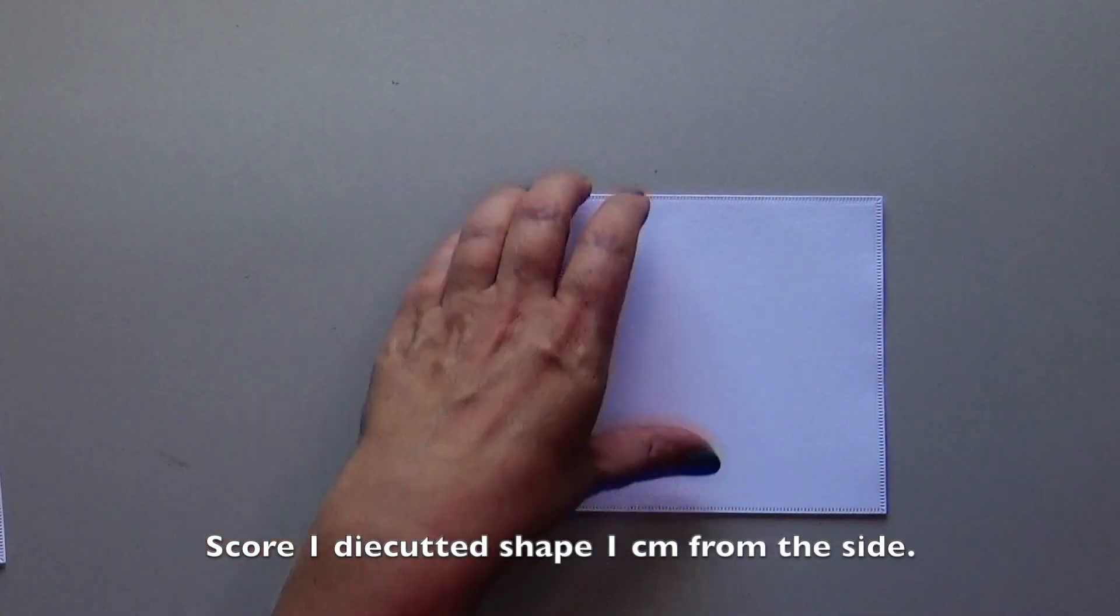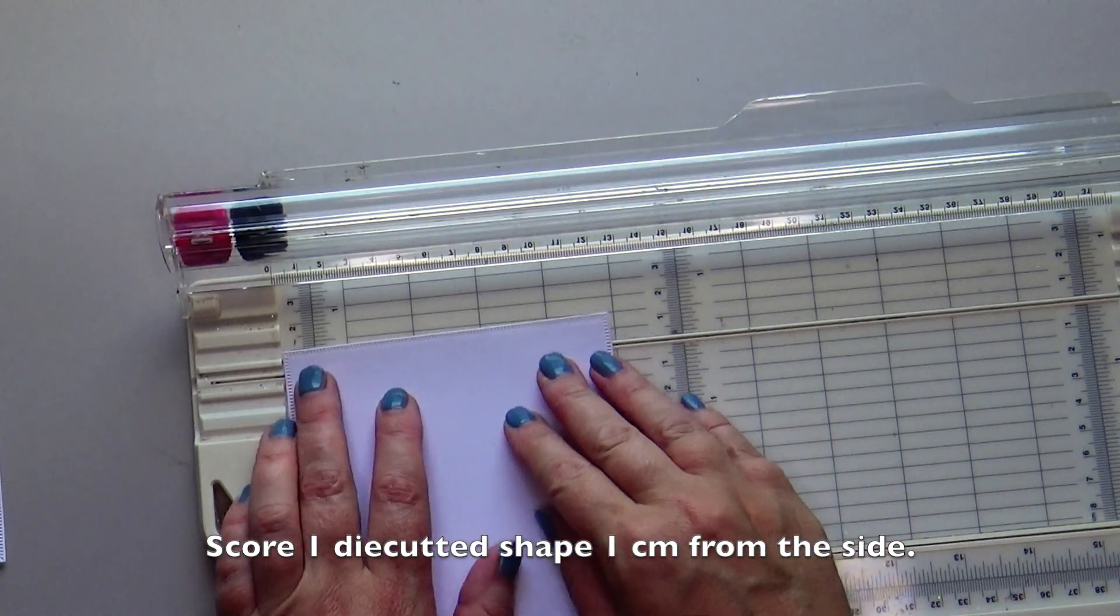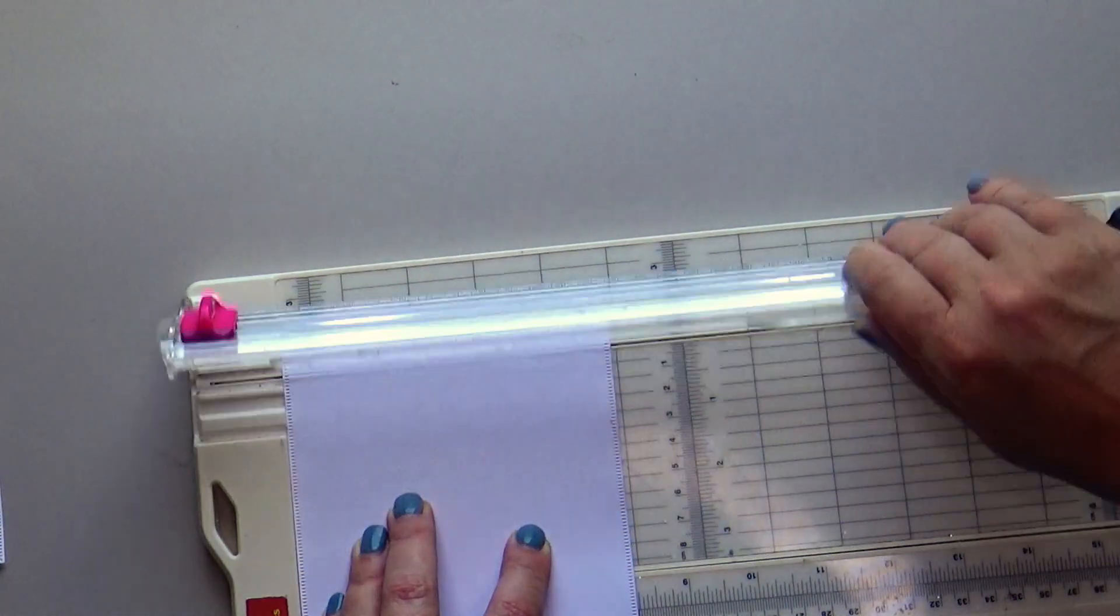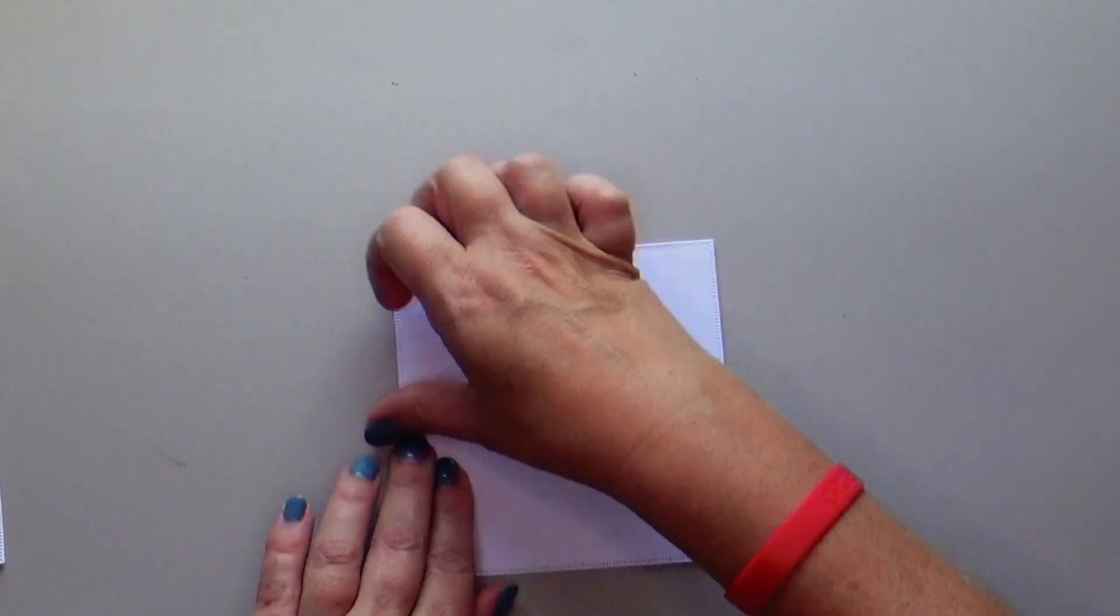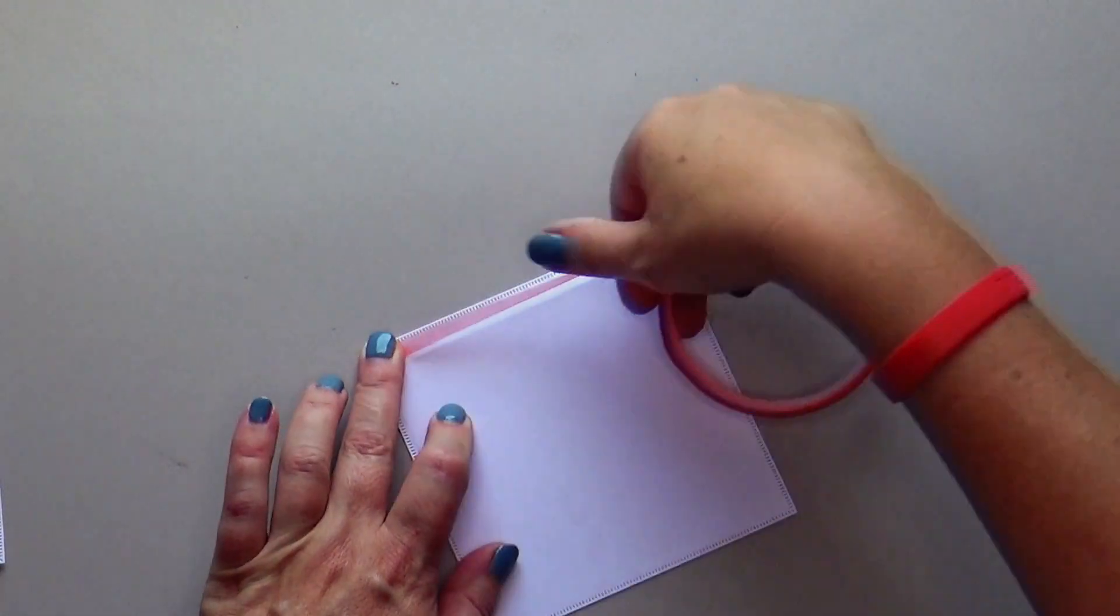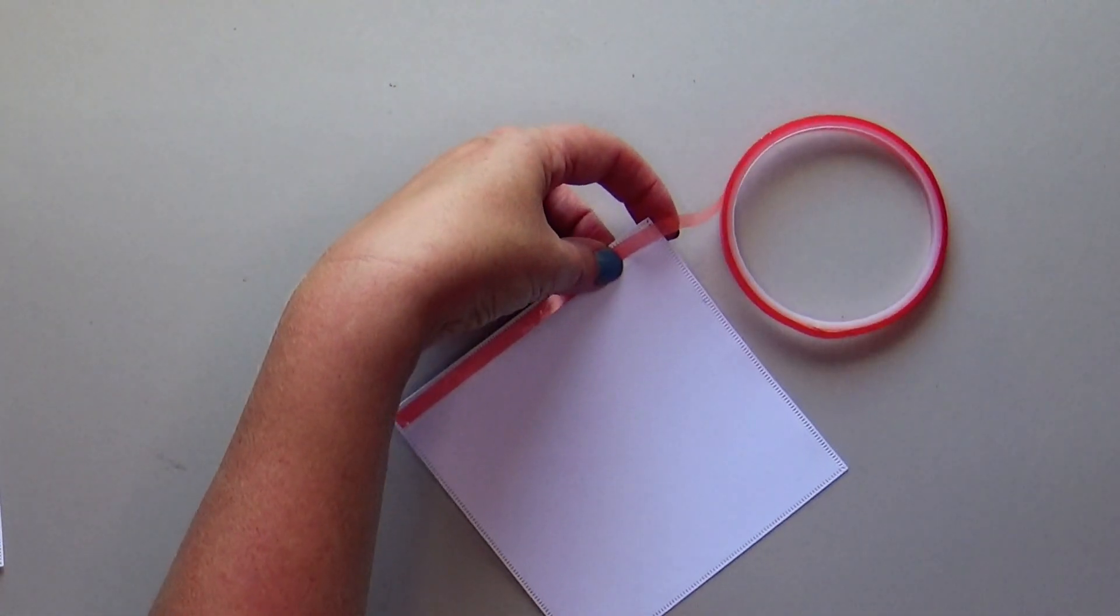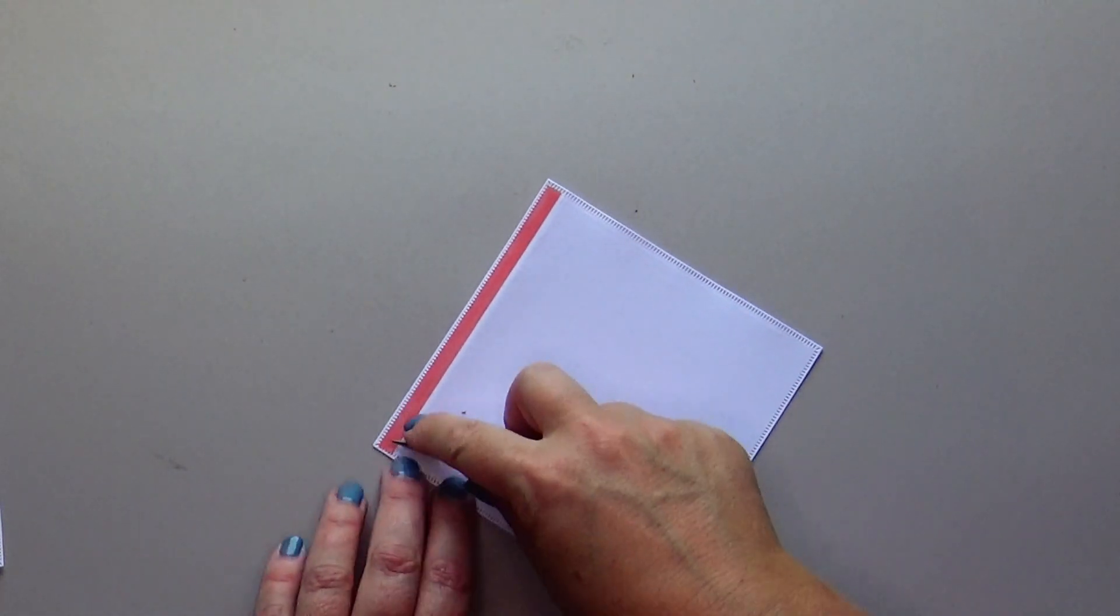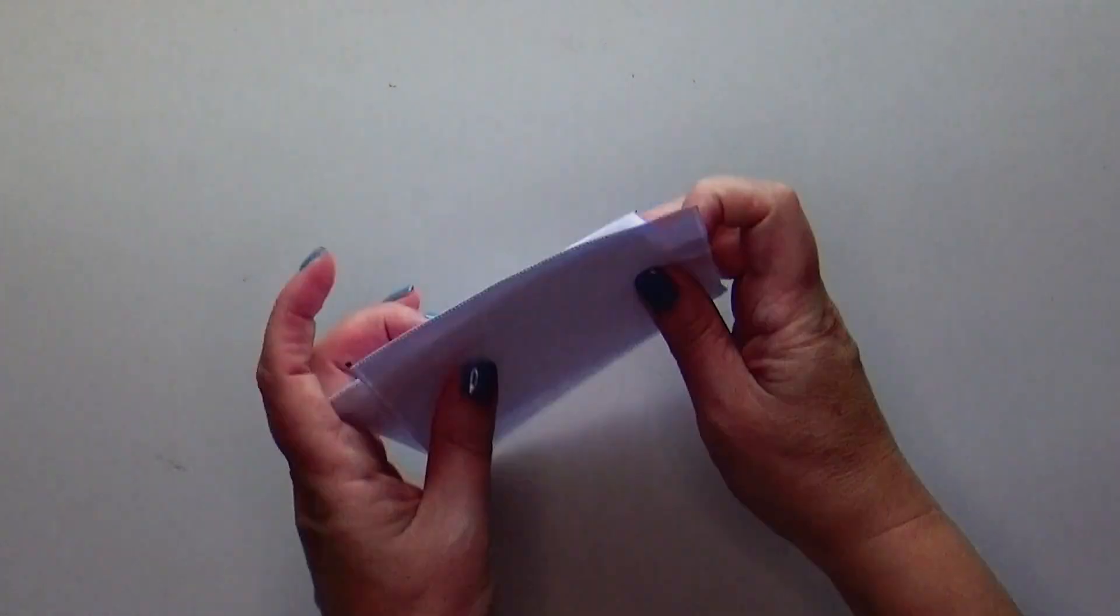Use the largest squares to make a hinge card from the two largest die-cut shapes by creasing one shape 1 cm from the sides. Fold the crease line. Stick red sticky tape onto the adhesive strip. Remove the protective layer from the red sticky tape and stick both shapes together.